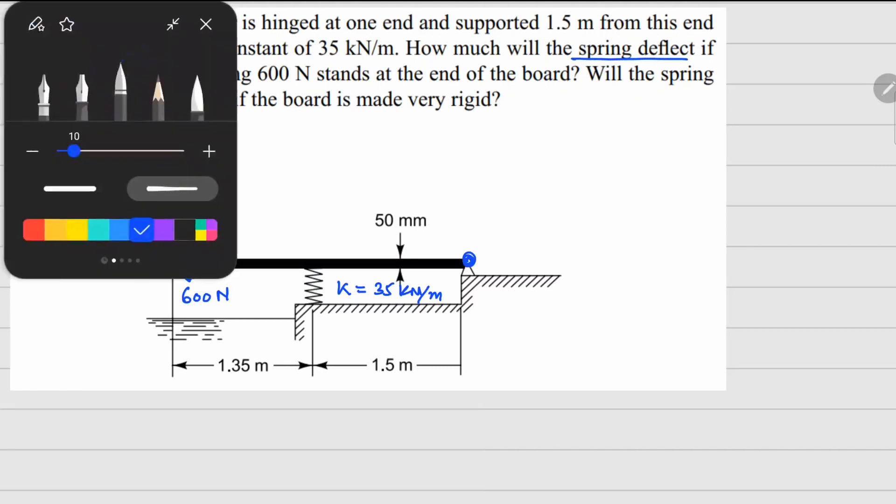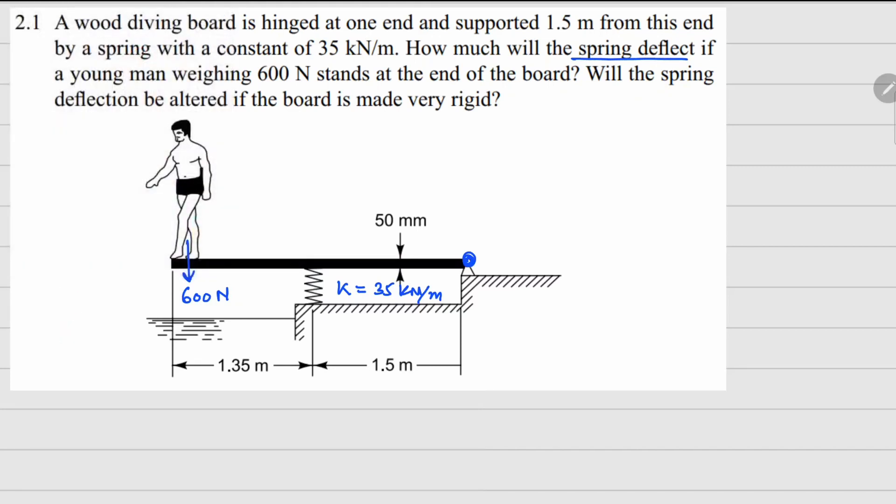If I assume that this board is rigid in nature so that after deformation it remains a straight line in this manner, the deformation of the spring here is going to be this delta and the spring force that will come on this board is going to be k delta here. Now we can do a moment balance about the hinge point here.